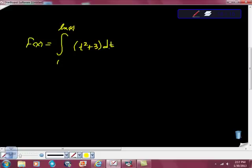I'm going to do exactly the same thing here. I'm going to substitute in the upper bound into the equation. The equation says that it's t squared plus 3. So I'm just going to take my ln of x and put my ln of x here. So that was really easy.